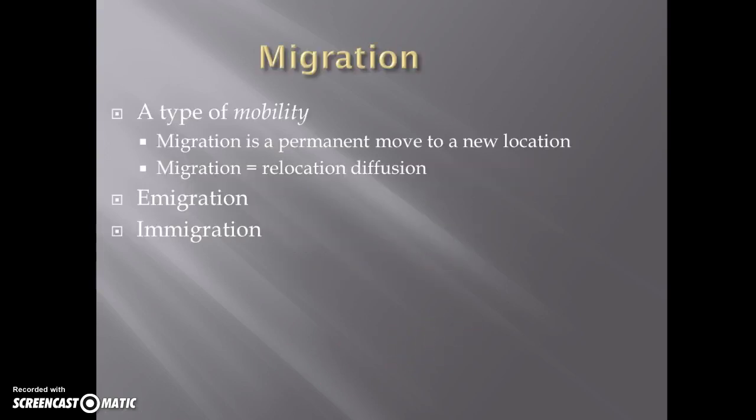The first thing you need to know about migration is that migration is a type of mobility — specifically, mobility that involves a permanent move to a new location. Migration is relocation diffusion. If you remember when we were talking about diffusion in the last unit, relocation diffusion is literally picking up and moving from one place to another, taking all of your culture and everything else with you to the new place.